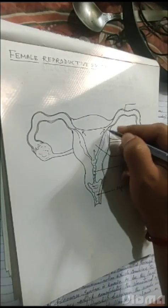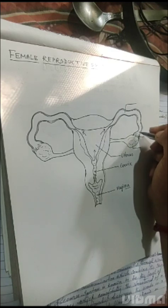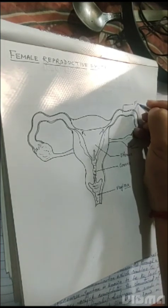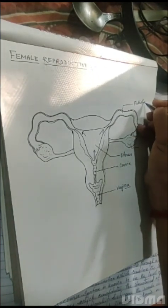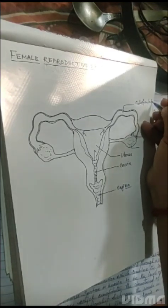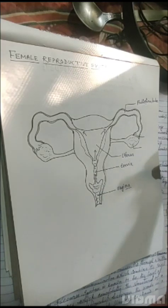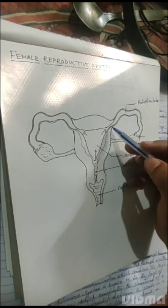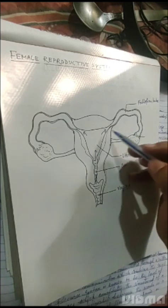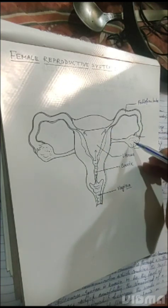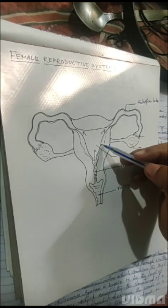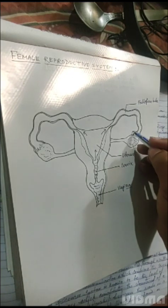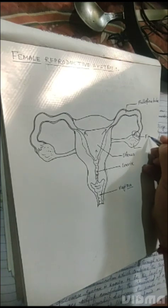The sperm moves upward and enters a thin lumen called the fallopian tube. Other names for it are oviduct or ovarian tube. It is a connection between the uterus and the ovary for the movement of sperm and fertilized eggs back to the uterus. You can see a brush-like structure here called the fimbriae.